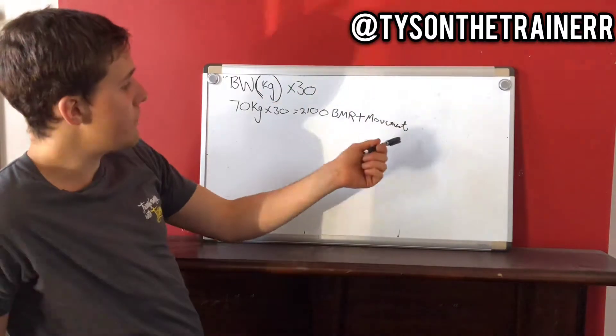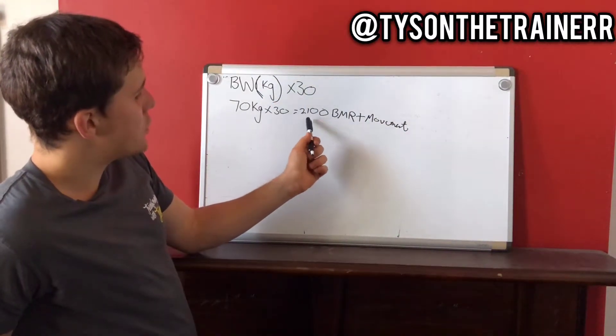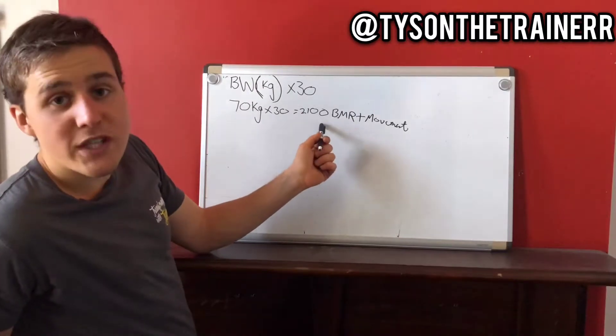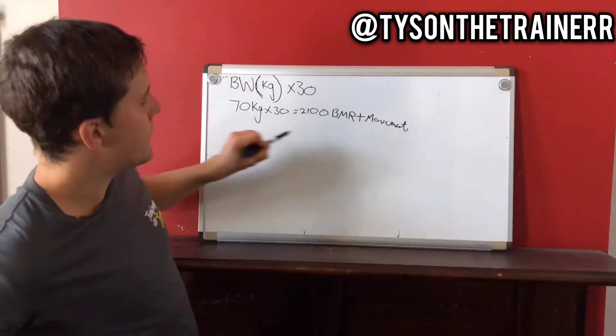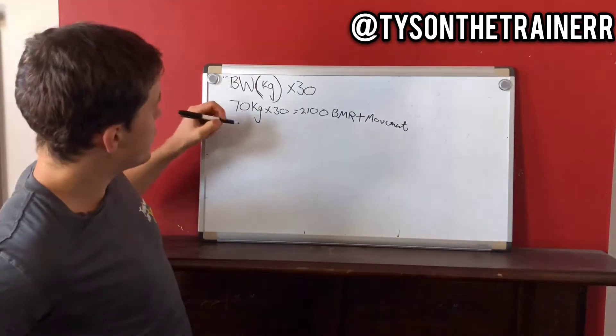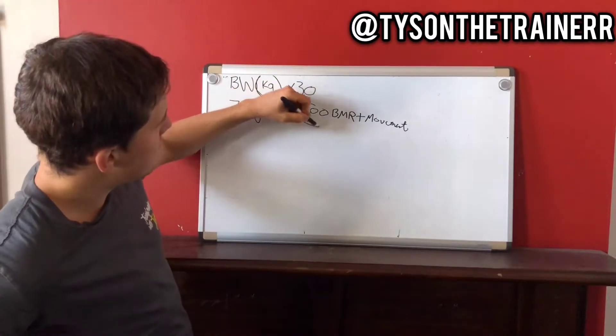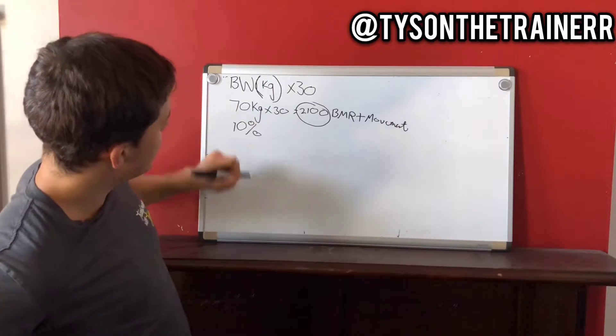But for the average 70 kilo male, he would be burning 70 kilos times 30 equals 2,100 calories on average is what he's burning. Now from here, this is what you need to maintain weight. So from here, if you want to do a weight loss, what you would want to do is you want to reduce this number by 10%.